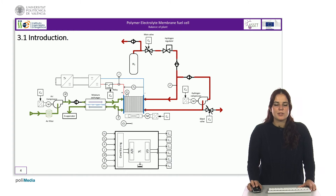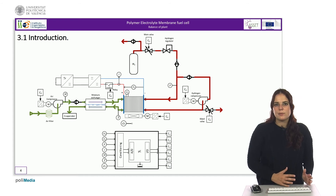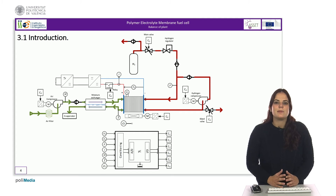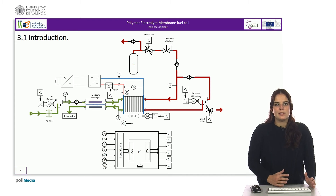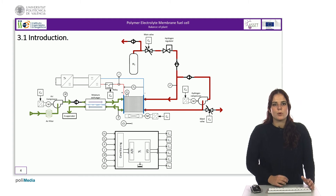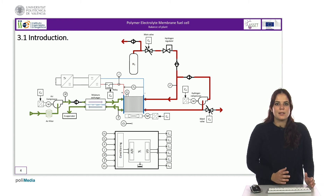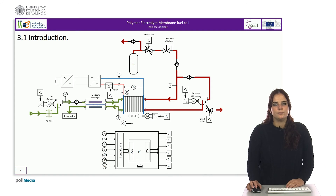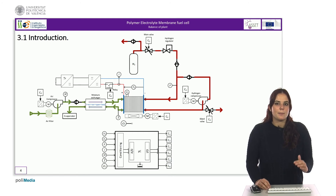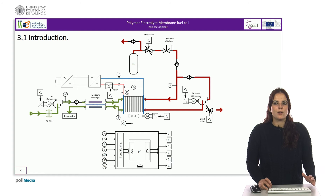Finally, it is necessary to measure the voltage generated by the entire stack and the current demanded by the load. The current measurement allows determining which is the reaction air flow that must be introduced into the stack. On the other hand, the voltage allows knowing when the region of the characteristic curve has been reached in which the concentration losses begin to be important. At that time, the control system must either alert the situation or directly disconnect the load by deactivating the protection relay, in order to preserve the membrane in good condition. The information provided by the sensors must be processed by a digital system, such as a microcontroller or a PLC, which constitutes the control system that activates each of the actuators described.